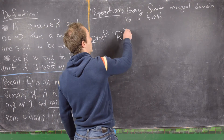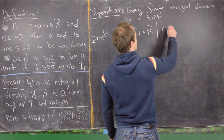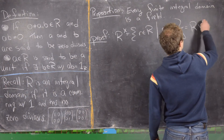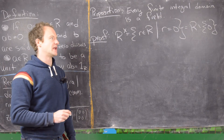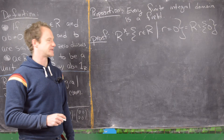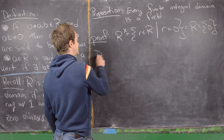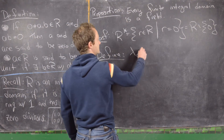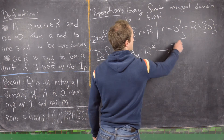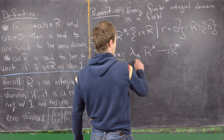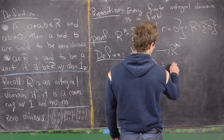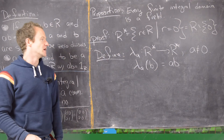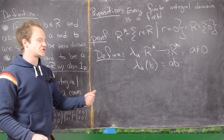First, let R* equal the set of all r in R such that r is not equal to zero — in other words, the ring viewed as a set with the zero (additive identity) removed. Now define the map λ_A from R* to R* by λ_A(B) = A times B, where A is a nonzero element of R. This is simply left multiplication by A.